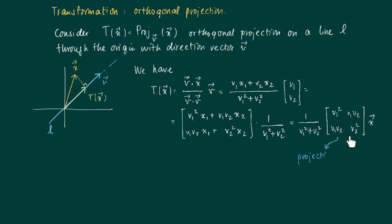which we will refer to as a projection matrix in R2. So here we get v1 squared on the diagonal, and on the other entries we get v1*v2.